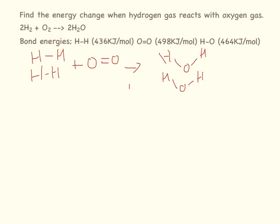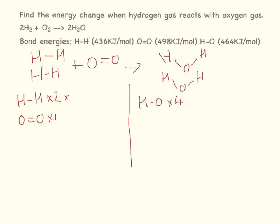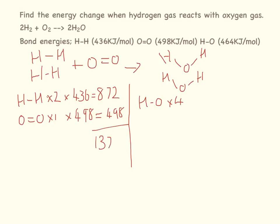Draw a line down the middle and list all the bonds. On the reactant side we have two H-H bonds and one O=O double bond. On the product side we have four O-H bonds. The H-H bond energy is 436 kJ/mol: 2 × 436 = 872. The O=O double bond energy is 498 kJ/mol: 1 × 498 = 498. Adding those together: 872 + 498 = 1,370 kJ/mol for the reactants.